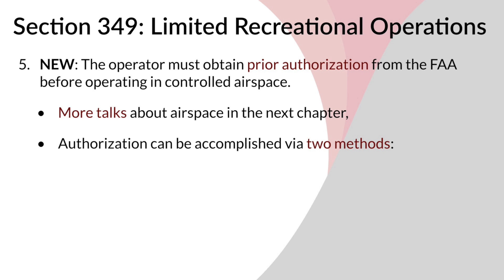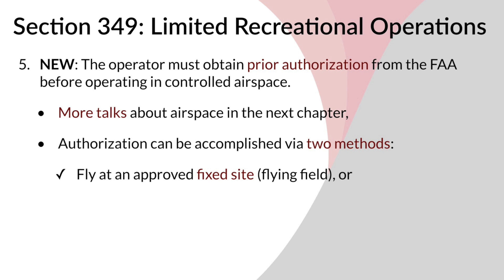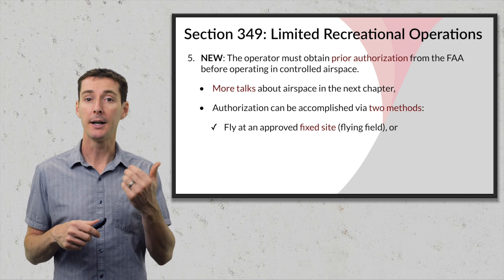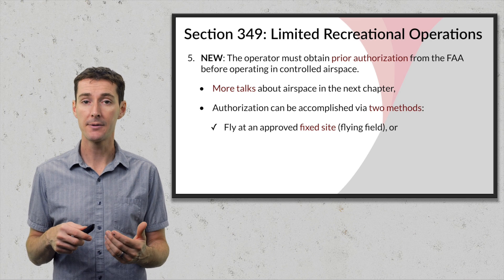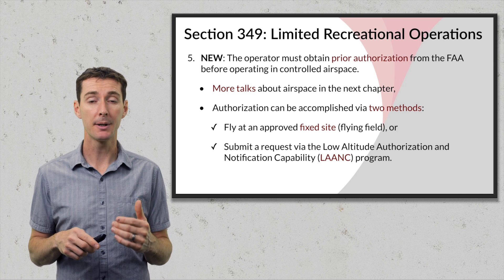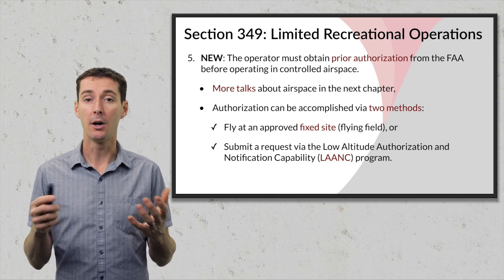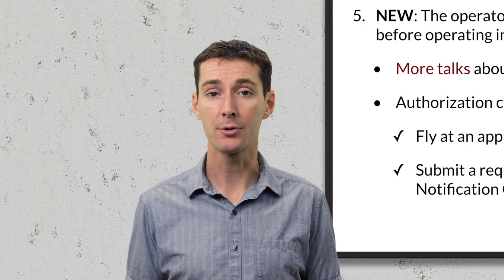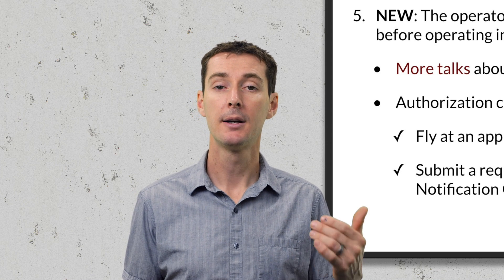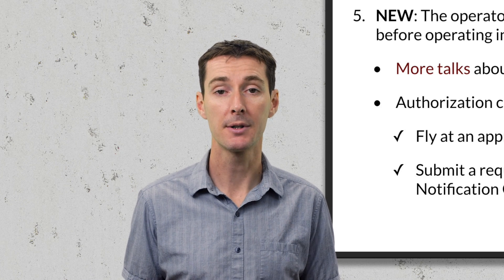The FAA has outlined two methods to get authorization. The first is to fly at an approved fixed site or flying field — I'll show you how to find these on a map. The second option is to submit a request via the LAANC program (Low Altitude Authorization and Notification Capability). LAANC was originally for Part 107 operators, but hobbyists will now also be required to use it for controlled airspace approval.